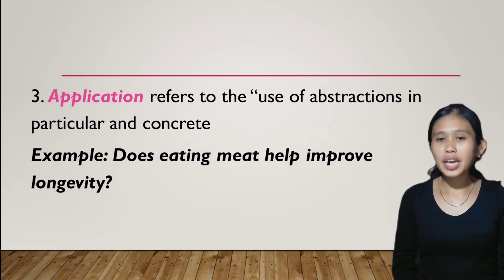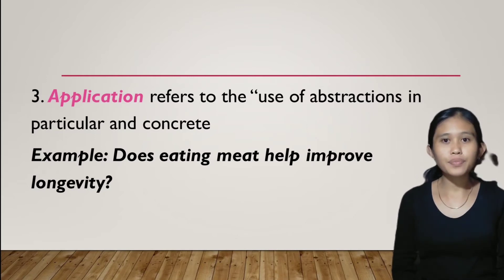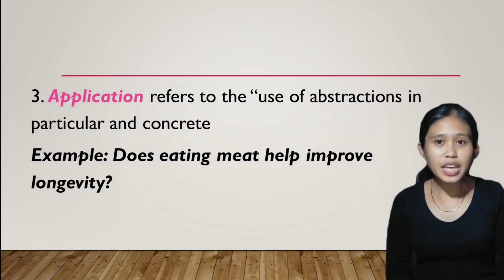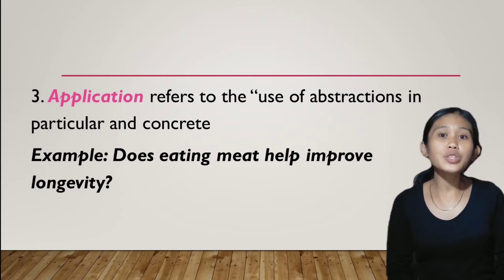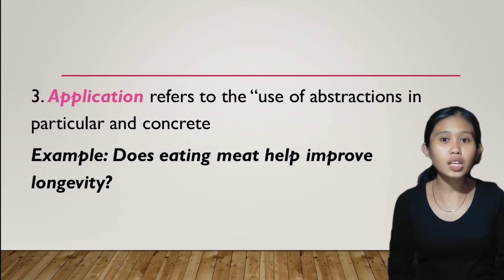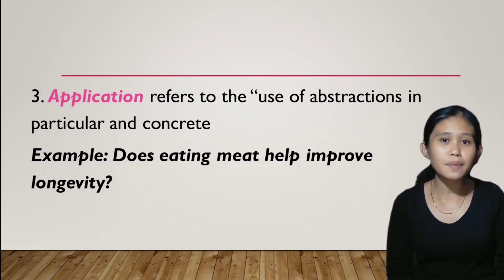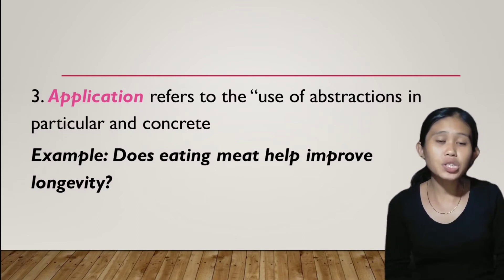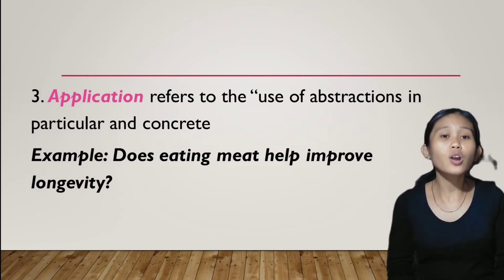Number three: application. Application refers to the use of abstractions in particular and concrete situations. For example, does eating meat help improve longevity? Application refers to the ability to use learned material in new and concrete situations. This may include the application of such things as rules, methods, concepts, principles, laws, and theories. Learning outcomes in this area require a higher level of understanding than those under comprehension.